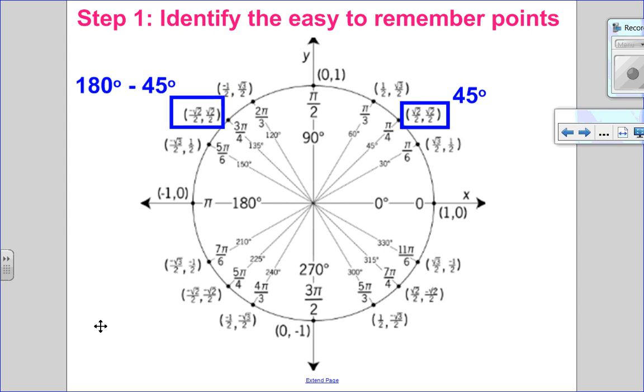In quadrant number 3, 180 plus 45 degrees has coordinates negative root 2 over 2 and negative root 2 over 2. Same thing in quadrant number 4. Quadrant number 4, 360 minus 45, also has coordinates root 2 over 2 and negative root 2 over 2. So I'm going to identify those easy to remember points and I'm not going to be graphing them.